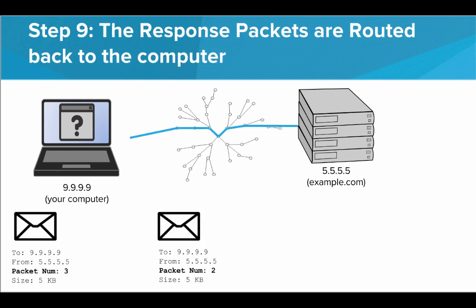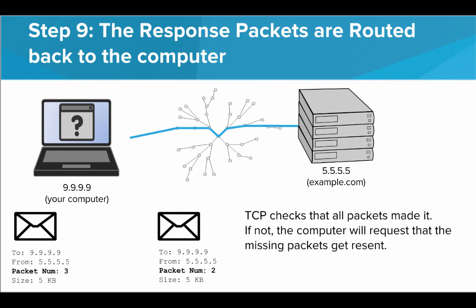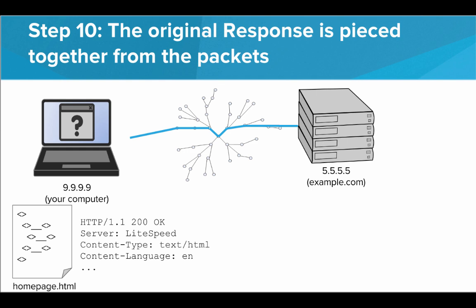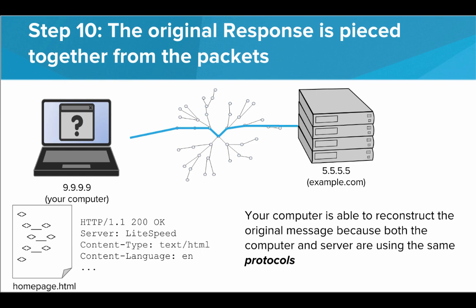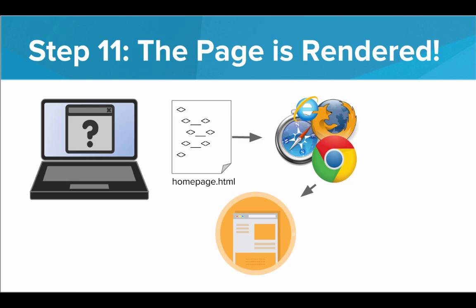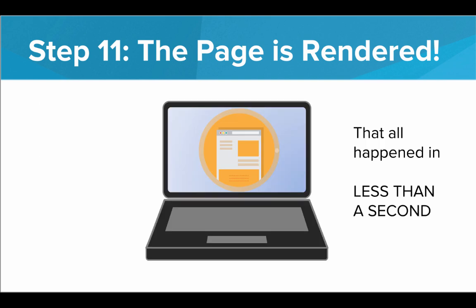That response then gets broken down into packets according to TCP and IP, and those packets are returned to the sender — we have the address of the sender because it was included in the original request. These packets will each individually get sent over the network, maybe some don't make it, they all take different paths. TCP will check that all the packets made it, and if not, we request that the missing packets get resent. Once we have all packets, we can reconstruct the original response, which contains homepage.html. Your computer is able to reconstruct the original message perfectly because both your computer and the server are using the same protocols — they're agreeing to talk in the same language. Now that it has the file, it can actually send it through the browser and it gets rendered as a beautiful webpage. And boom — you have your webpage, starting with the URL, going through the request, broken up into packets, the server finds the resource, sends it back to you in packets, and you reconstruct it. And that all happened in less than a second. That is the story of the internet from start to finish.